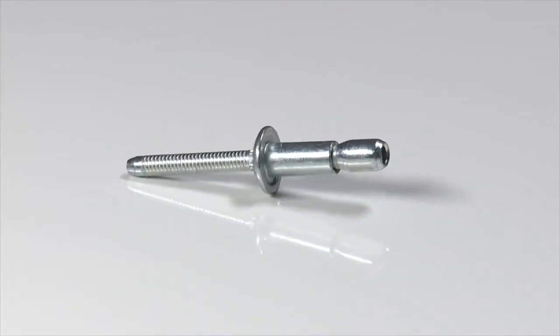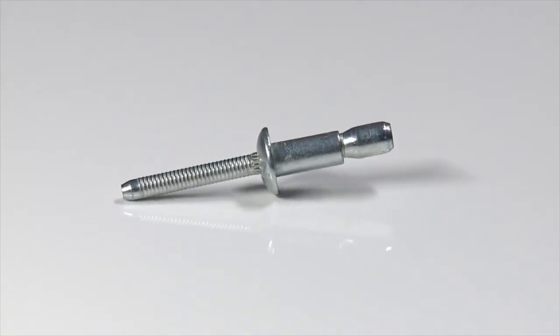A structural blind fastener comprises two components: a sleeve and pin, pre-assembled to provide a fastening solution that can be used in applications with both single and double side access.